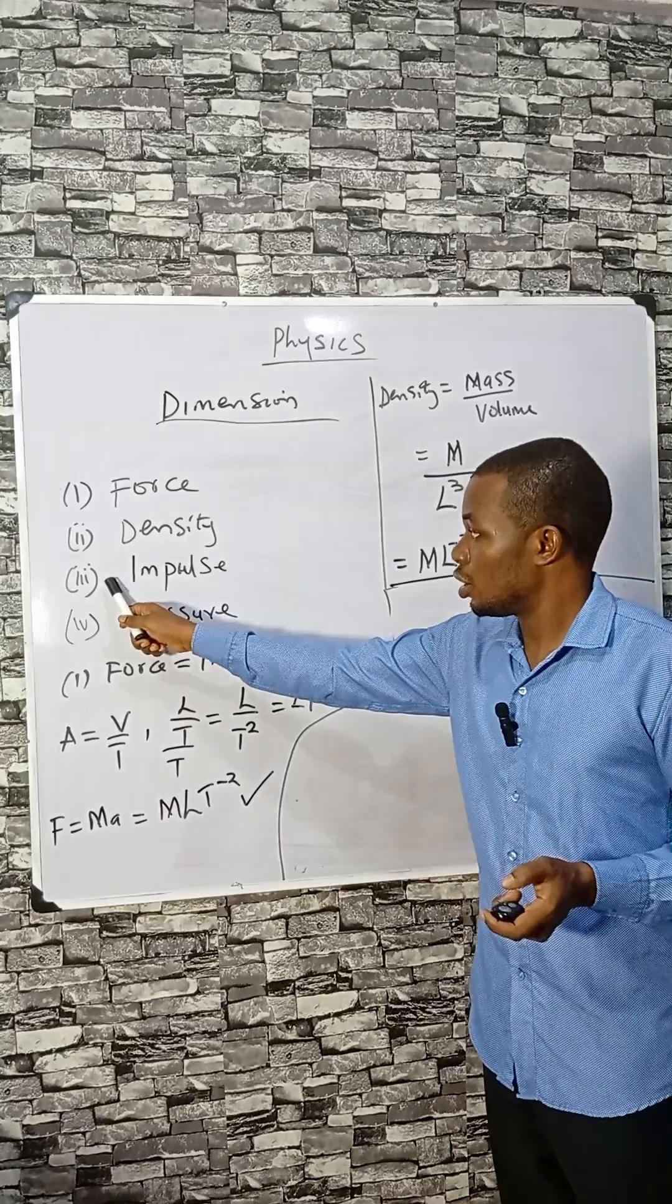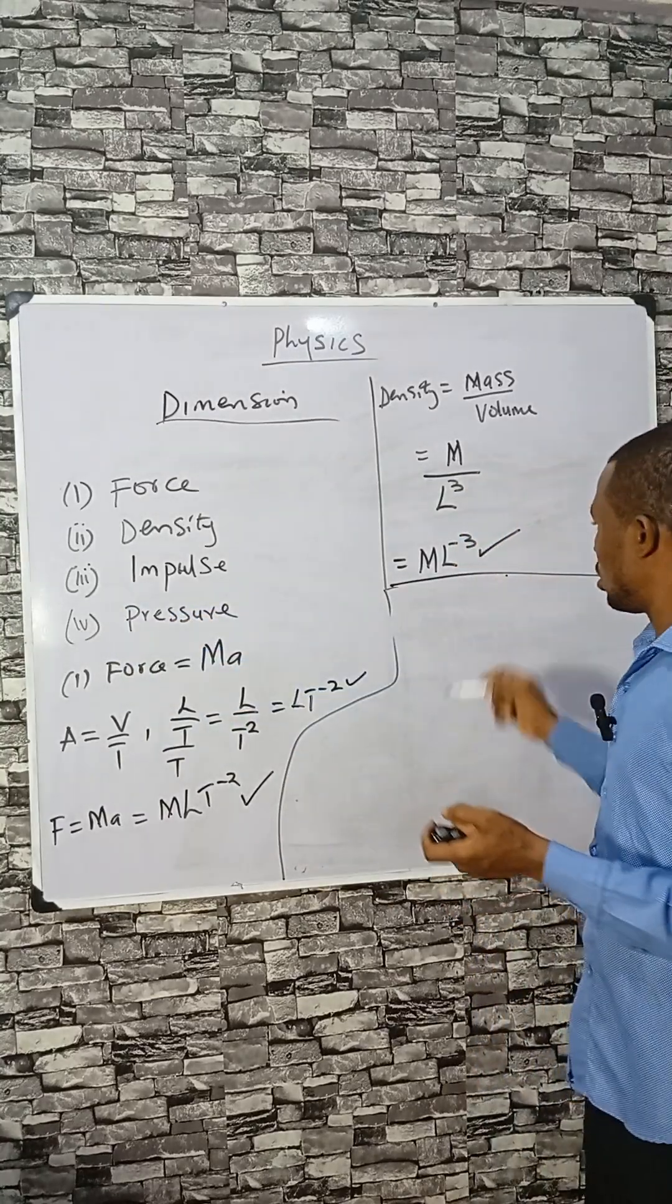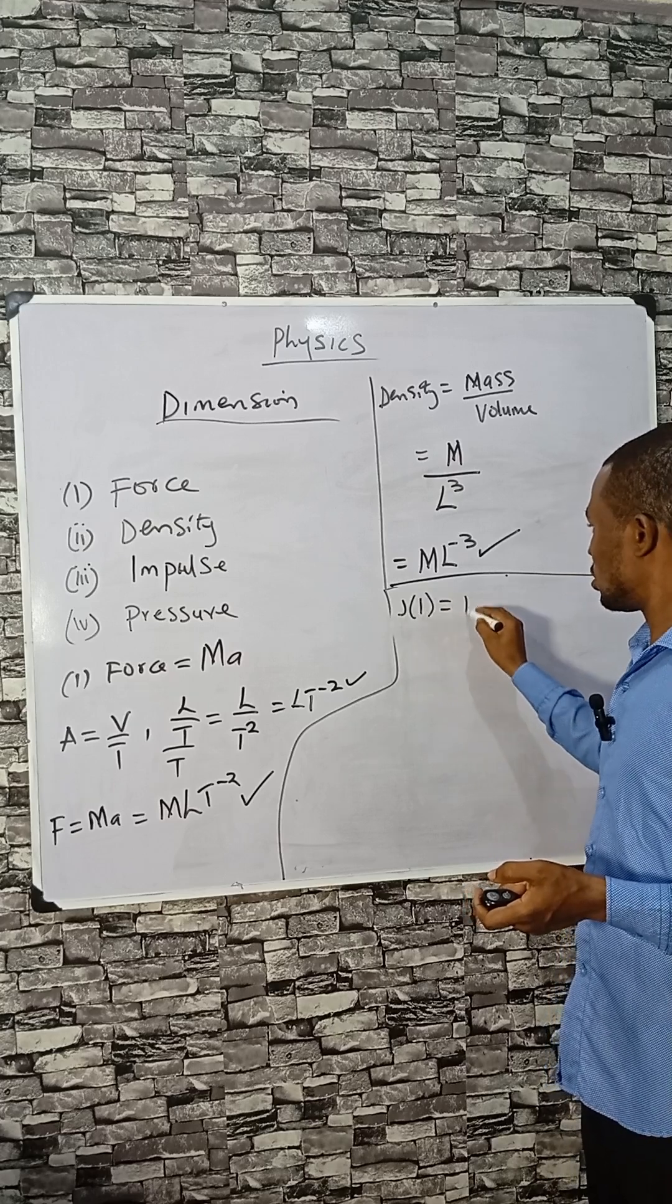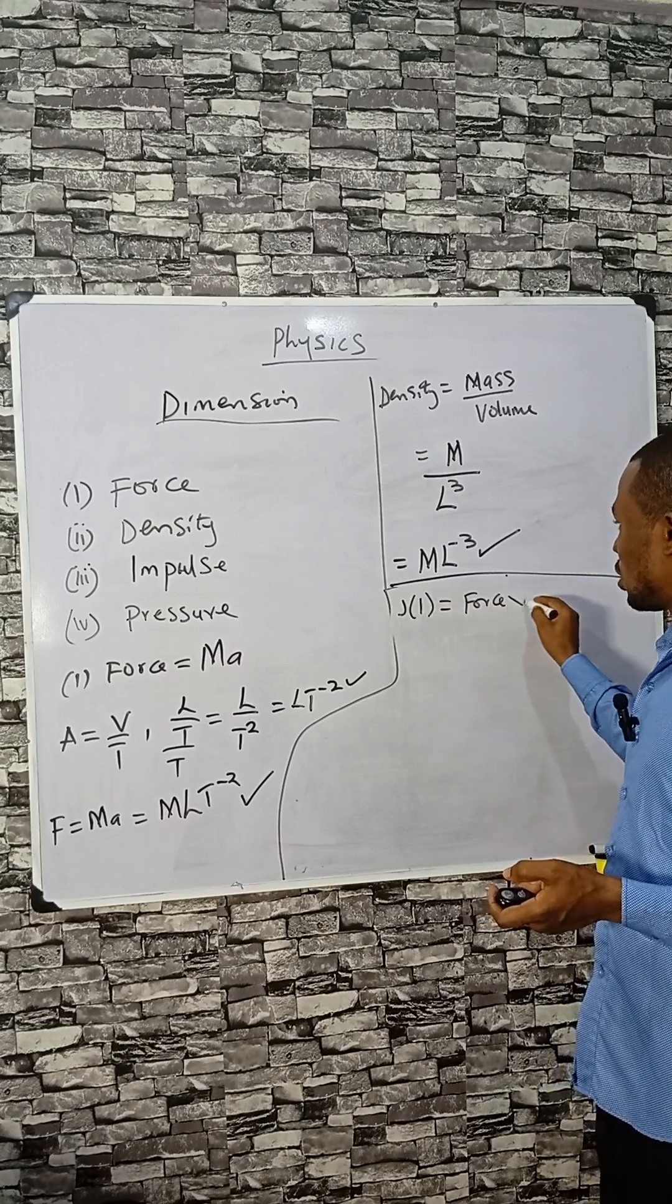Let's consider the two limiting cases: impulse and pressure. Impulse, you can use J or I to represent, is a product of force times time.